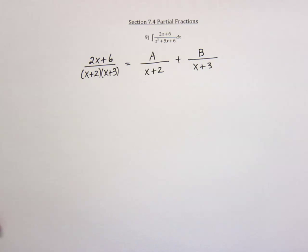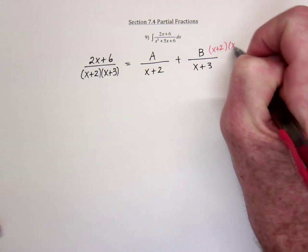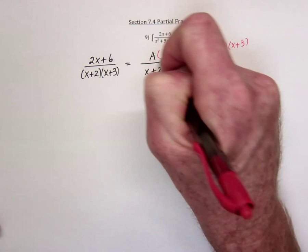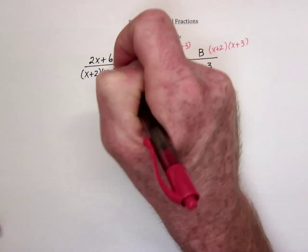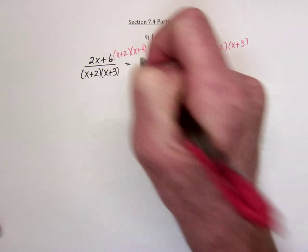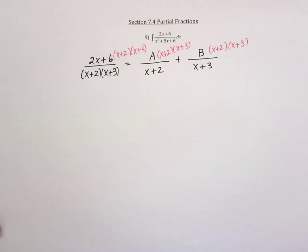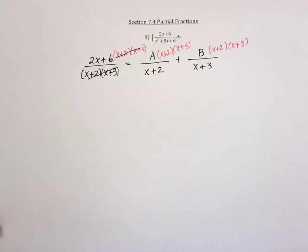Now, clear the fractions. Multiply everything by x plus 2 times x plus 3. And on this side. So over here, everything is going to cancel except for the 2x plus 6.